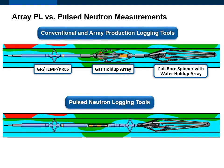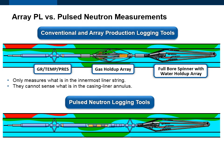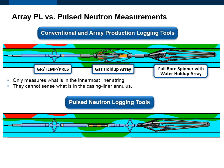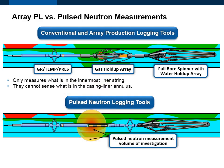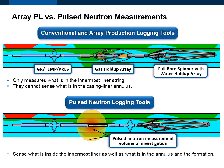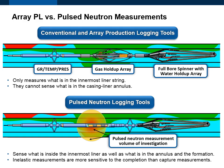This slide shows one of the fundamental differences between conventional and array production logging tools compared to pulse neutron logging tools. The upper part of the figure shows a gas holdup array tool and a full bore spinner with resistance water holdup array probes in the liner that is inside a casing string. This production logging string can only measure what is happening to the fluids inside the innermost liner — it cannot measure anything that is happening in the liner-casing annulus. The lower part of the slide shows a pulse neutron tool run in combination with a full bore spinner with resistance water holdup array probes in the liner. The diffuse shaded part of the figure shows the volumetric measurement sensitivity of various pulse neutron measurements such as the carbon-oxygen ratio and the inelastic near-to-far count rate ratio. These measurements are not only sensitive to what is inside the liner, they are also sensitive to what is in the annulus and to what is in the formation.